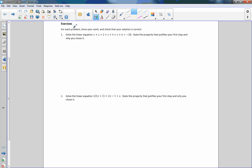Okay, so here we go. For each problem, show your work and check that your solution is correct. Number one: solve the linear equation x + x + 2 + x + 4 + x + 6 = -28. That looks familiar - lesson 2 or lesson 1 in this module we came up with this expression but did not solve it. So now we're going to solve it. Here's how we do it: we have an x, another x, another x, and another x here. So what I'm doing is I'm color coding my like terms. X's are like terms and constants are like terms. There's a 2, there's a 4, and there is a 6.